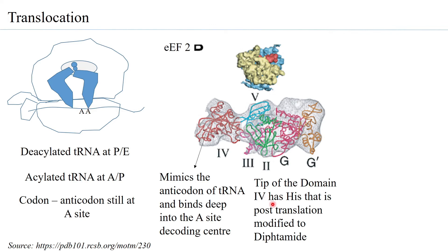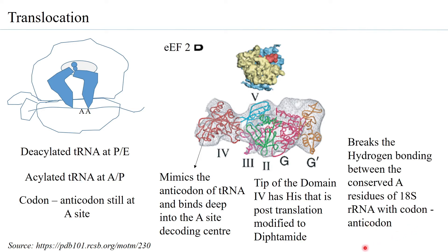The tip of domain 4 has a histidine that is modified to a residue called diphthamide. This diphthamide has a role in breaking the hydrogen bonding between the two conserved A residues of 18S rRNA and the codon-anticodon. The elongation factor 2 domain 4 disrupts the interaction between the codon-anticodon and the 18S rRNA, loosening the hold of the tRNA on the 18S rRNA of the small subunit and increasing flexibility.